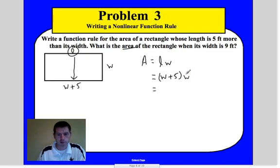And then simplify. So I'm going to distribute, and I get W squared, distribute, and I get plus five W. And I have A equals. So there's my formula. So really, there's my equation.